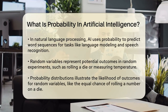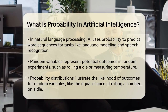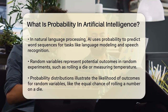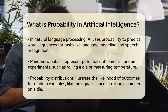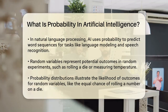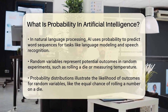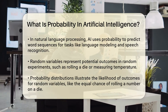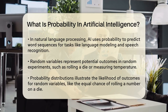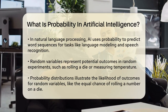One key concept in AI is the random variable. This is a placeholder for potential outcomes in a random experiment, like rolling a die or measuring temperature. These variables can be discrete, counting outcomes like the number of customers in a store, or continuous, like the varying levels of light in a room.